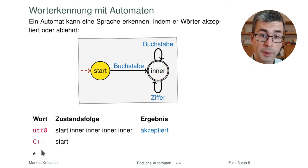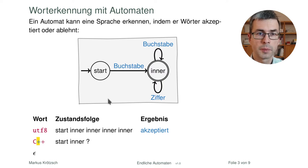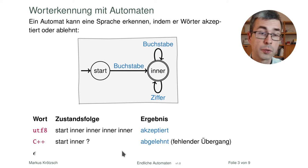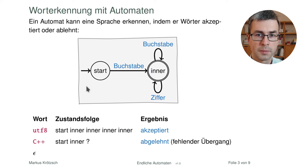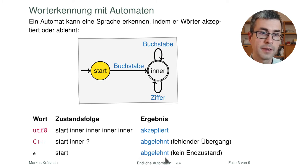Das Wort endet, wir befinden uns im Endzustand 'inner', also wird die Eingabe akzeptiert. Beim zweiten Beispiel 'c+' beginnen wir wieder mit dem Startzustand, lesen 'c' — ein Buchstabe — und gelangen zu 'inner'. Dann folgt '+', das weder Buchstabe noch Ziffer ist: es gibt keinen Übergang, der Automat gibt auf und lehnt die Eingabe ab. Das dritte Verhalten ist das leere Wort: wir beginnen im Startzustand, haben keine weiteren Eingaben, und da dies kein Endzustand ist, wird auch das leere Wort abgelehnt.